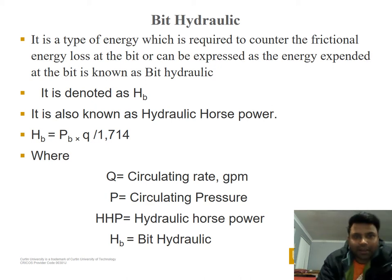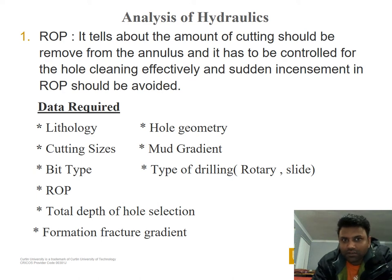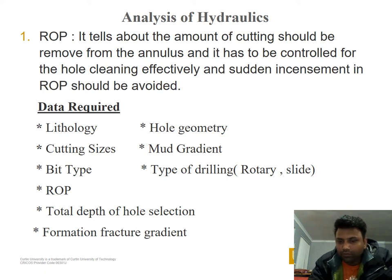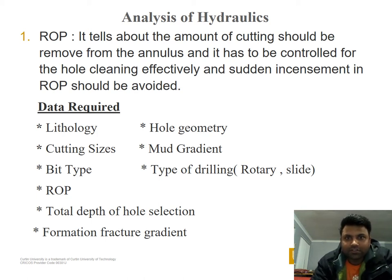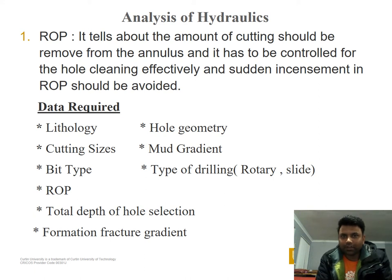Hydraulic horsepower analysis tells us where pressure is being lost and how we can work on that. The first very important parameter in hydraulic analysis is ROP — rate of penetration. It tells about the amount of cutting that should be removed from the annulus and must be controlled for effective hole cleaning. A sudden increase in ROP should be avoided.